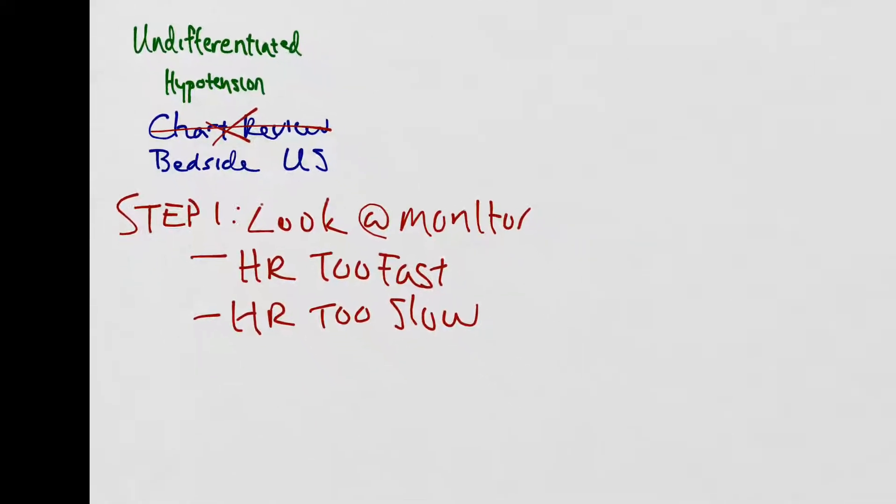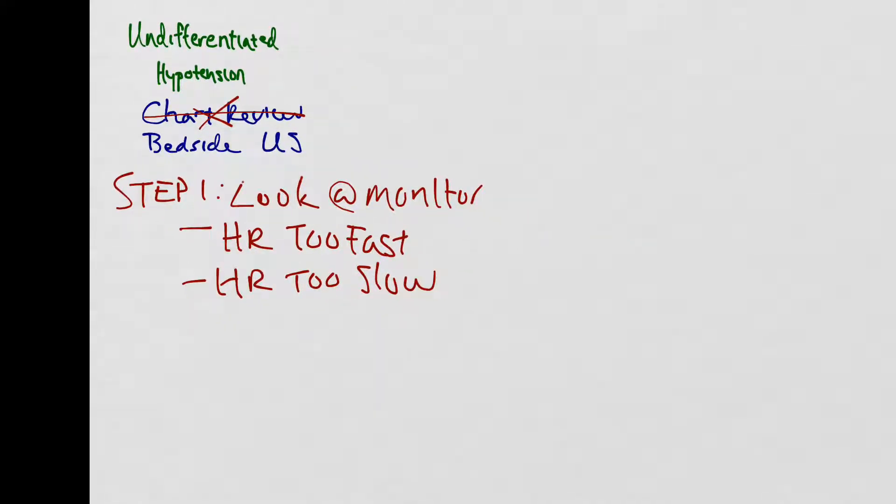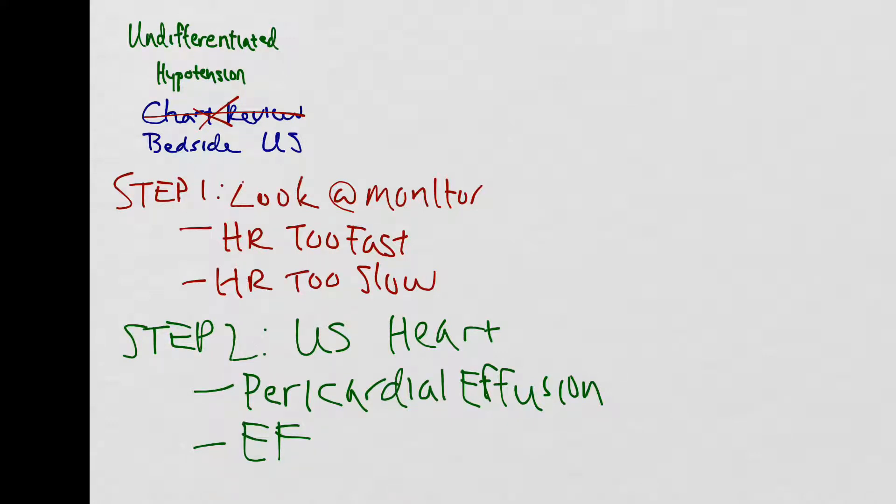Now that you're done with step one, we'll move to step two. For step two, you want to grab your ultrasound and look at the patient's heart. The main things that you're looking for is if there's a pericardial effusion, if the EF is okay or if it's crap, and finally, if there's any right heart strain.